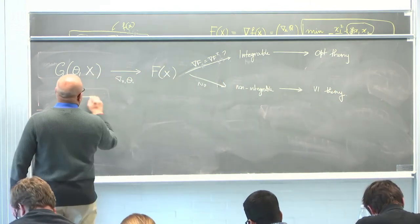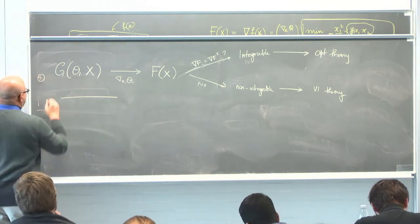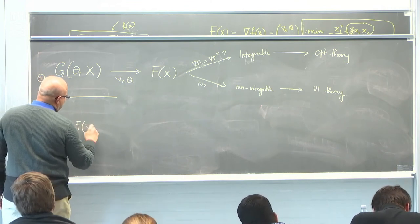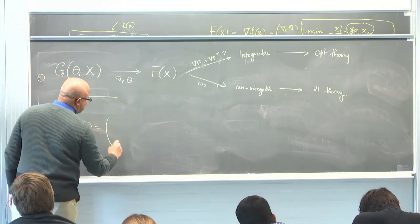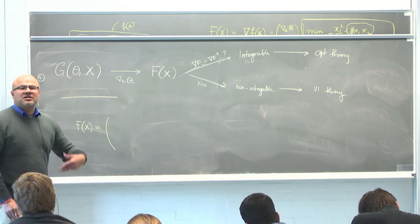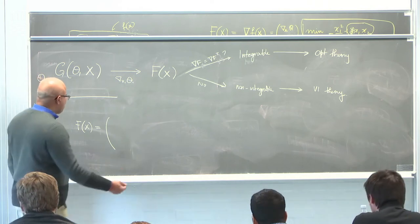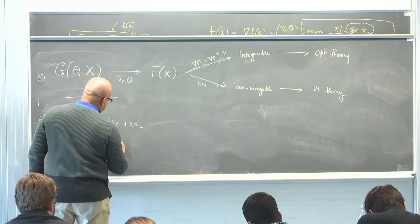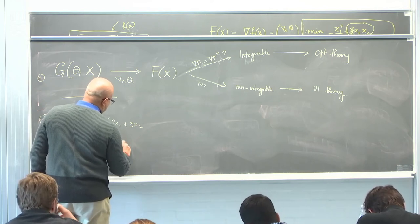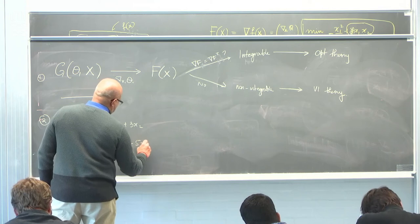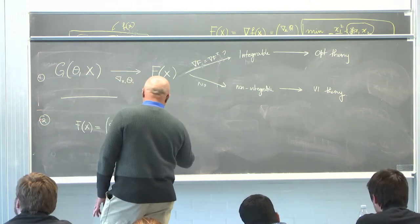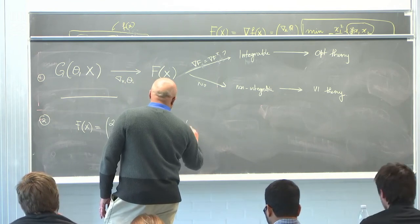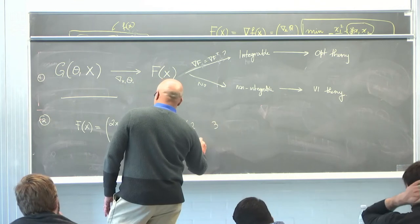A second question that came up was: suppose I tell you that the map I get is 2x1 plus 3x2. How do I construct the associated optimization problem? If you write down the Jacobian of this, that's just the matrix with entries 2, 3, 3, 5.